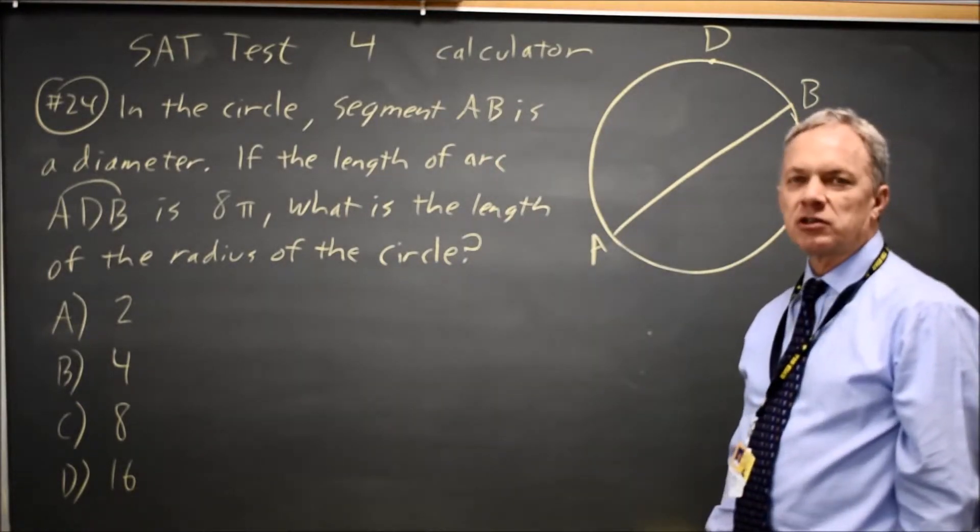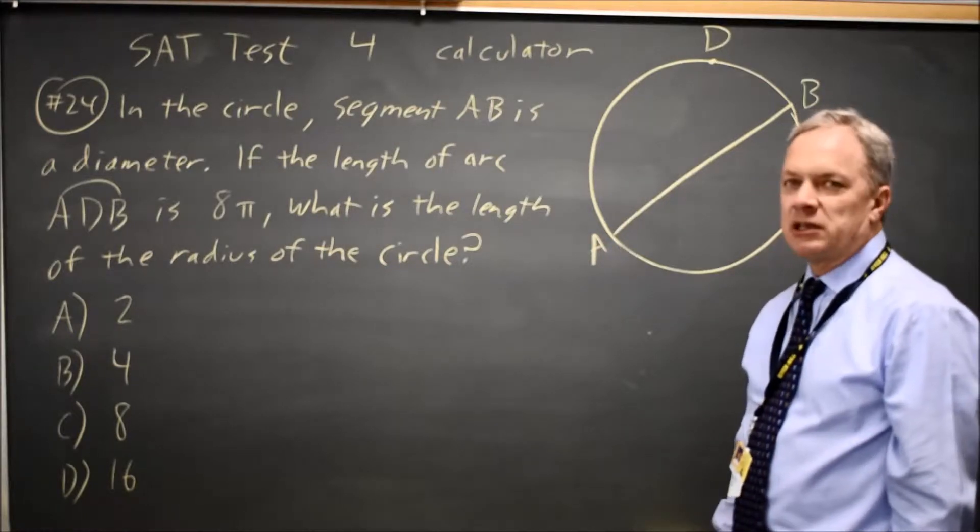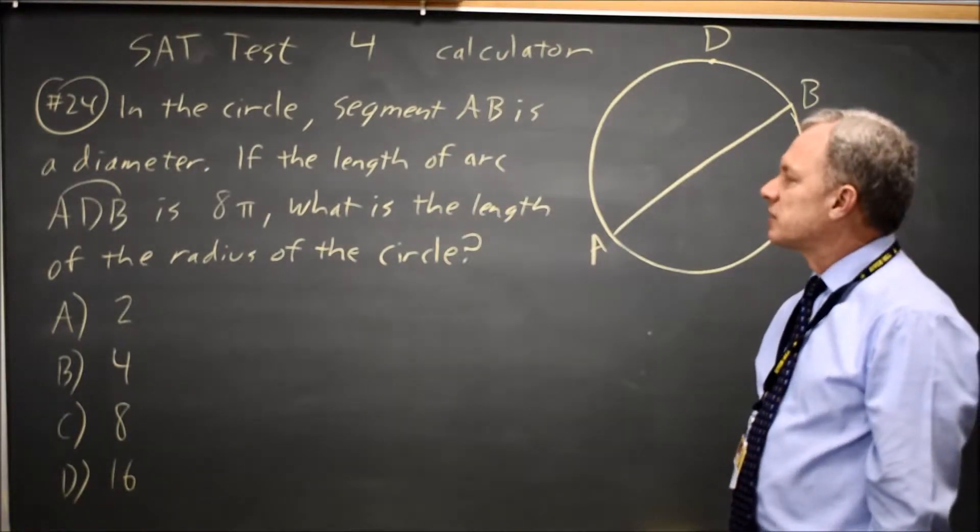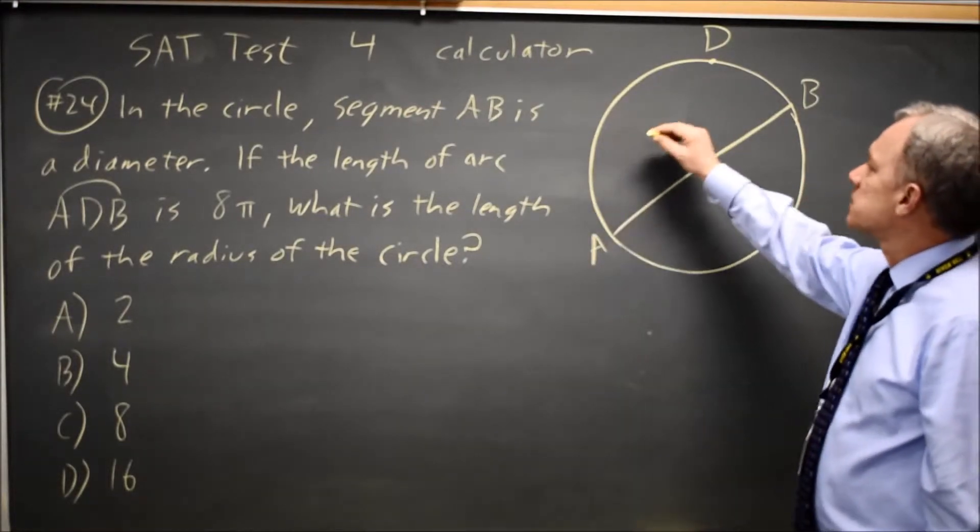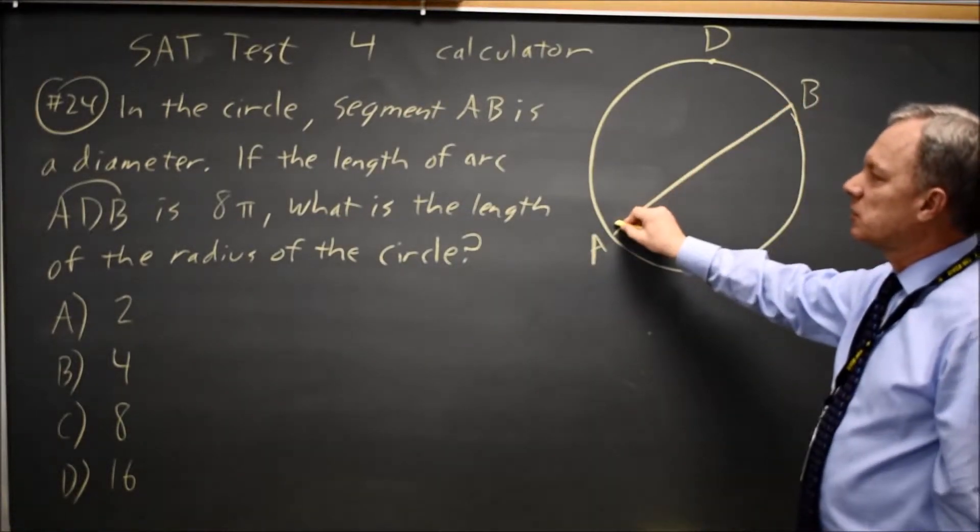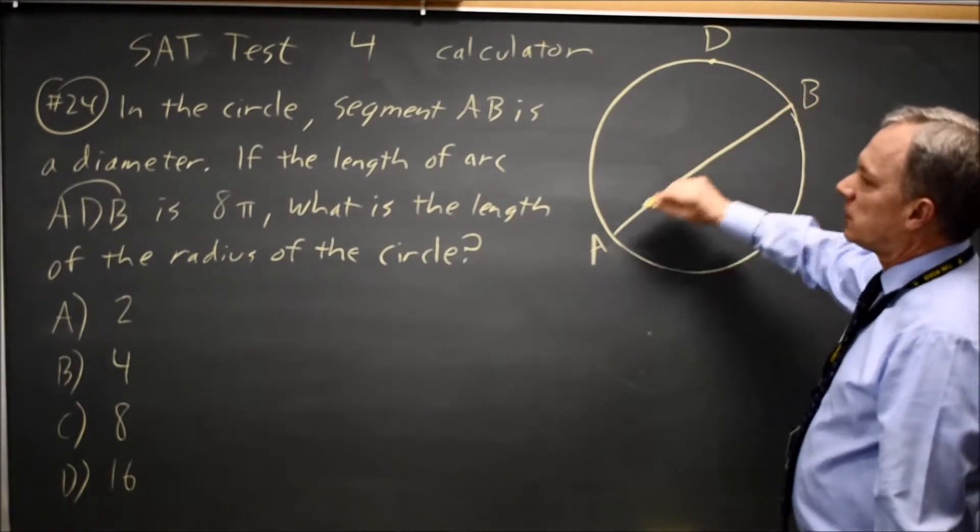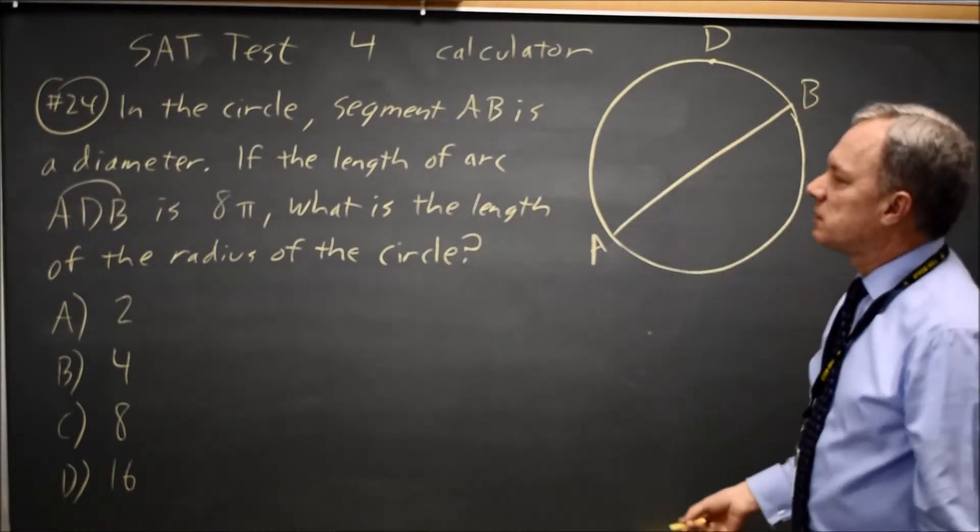Both the equation of the circle and something about the area, circumference, or something with the angles. In this case, segment AB is a diameter.